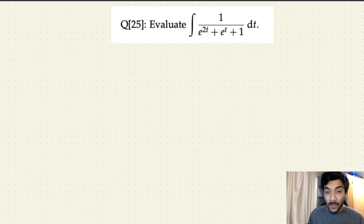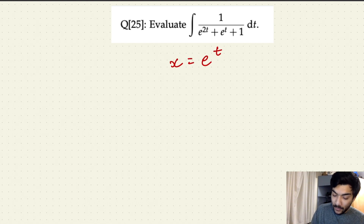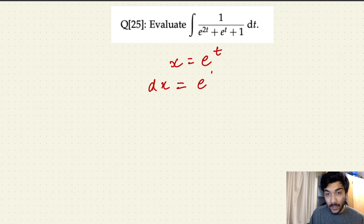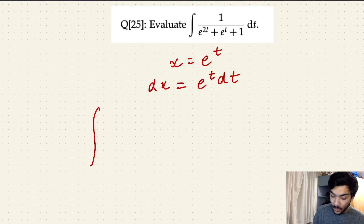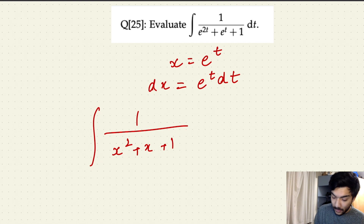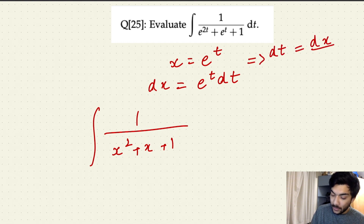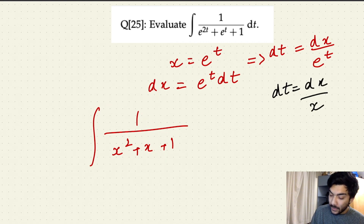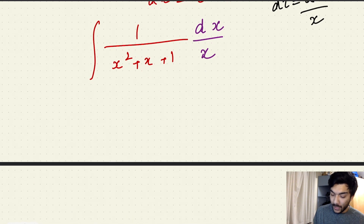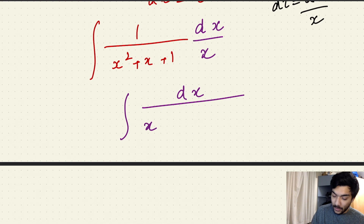Let's use substitution first, and assume x to be e to the power t. We'll have to convert dt as well in terms of dx. So dx would be e to the power t dt. And now we can convert our integral expression — the denominator becomes x squared plus x plus one, and dt can be converted to dx over e to the power t. Since e to the power t is essentially x, dt is basically dx over x.